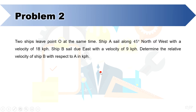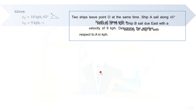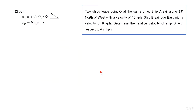Therefore, the required relative velocity will remain the same at any given time. We are given the magnitude and direction of the velocity of each ship. We are then required to solve for the velocity of ship B with respect to ship A.